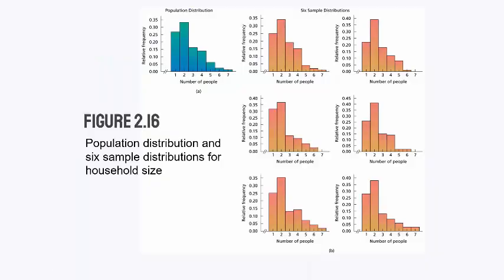Imagine you have all the households in the United States and you could figure out the number of people living in each household — the household size. That would be the population distribution. It looks like the majority of households have one or two people, and as household size increases there are fewer households — this looks like a right skewed distribution. But is it really possible to contact every single household in the US? The census tries, but even the census isn't 100% correct, and no matter how hard the government tries, they can't reach everyone.